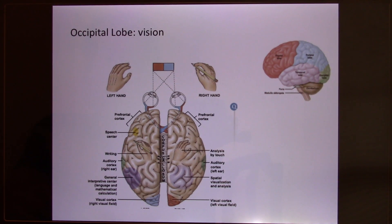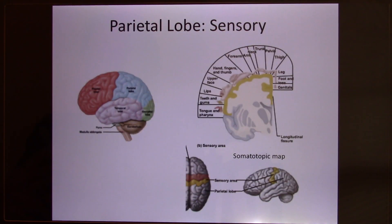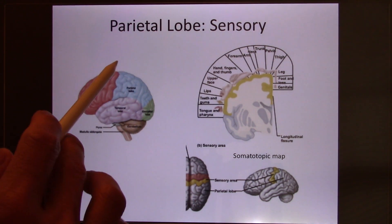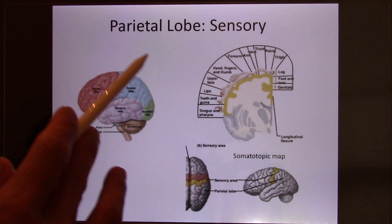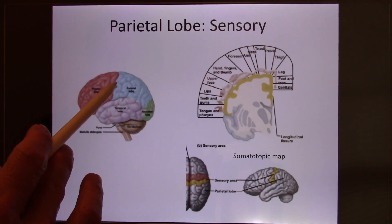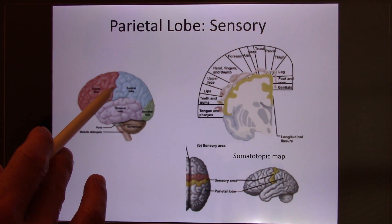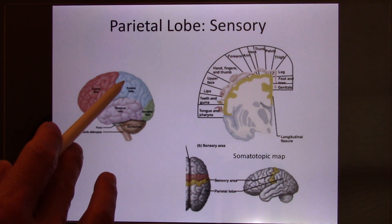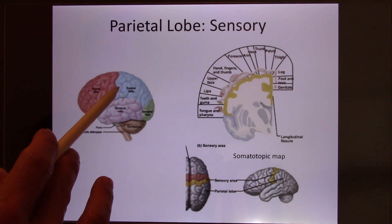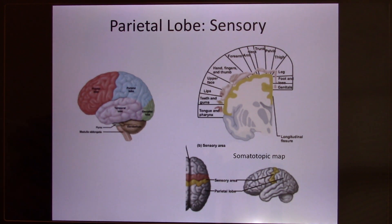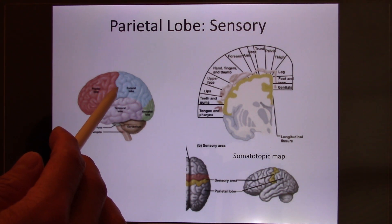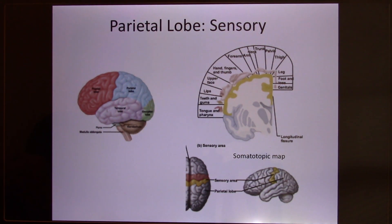Now let's go to the parietal lobe. The parietal lobe is big. Let's look at one function called somatosensory — a lot of sensory function goes to the parietal lobe. The central sulcus is the separation between the frontal lobe and parietal lobe. Just behind it is the postcentral gyrus, and that is where the somatosensory cortex is located.